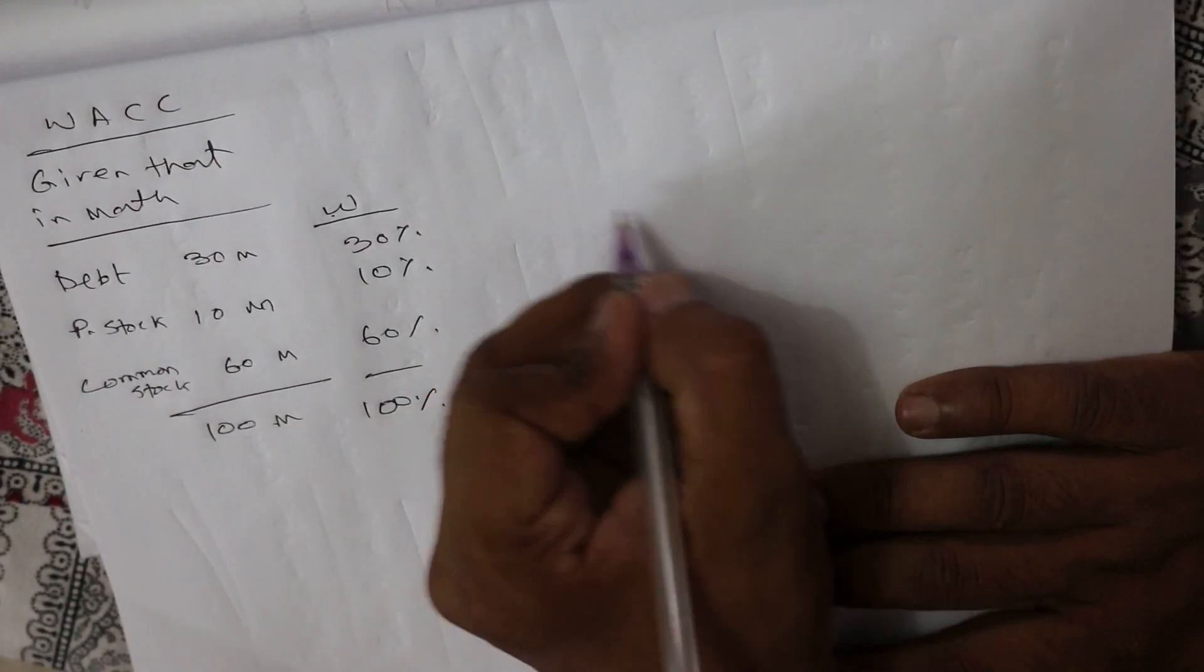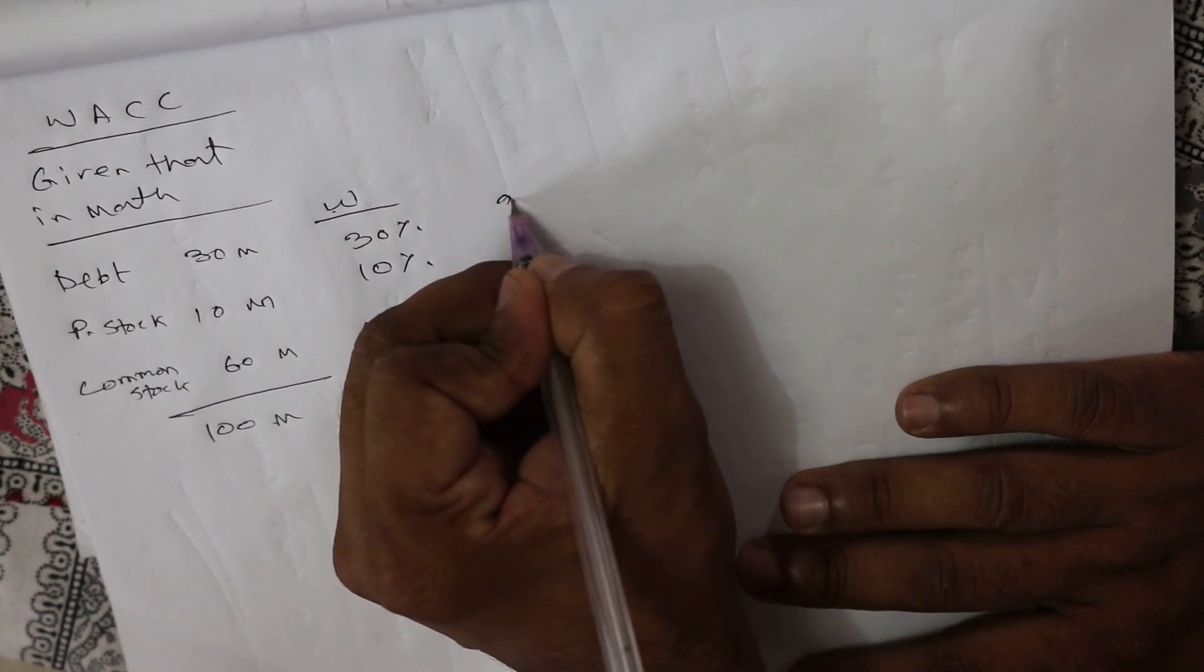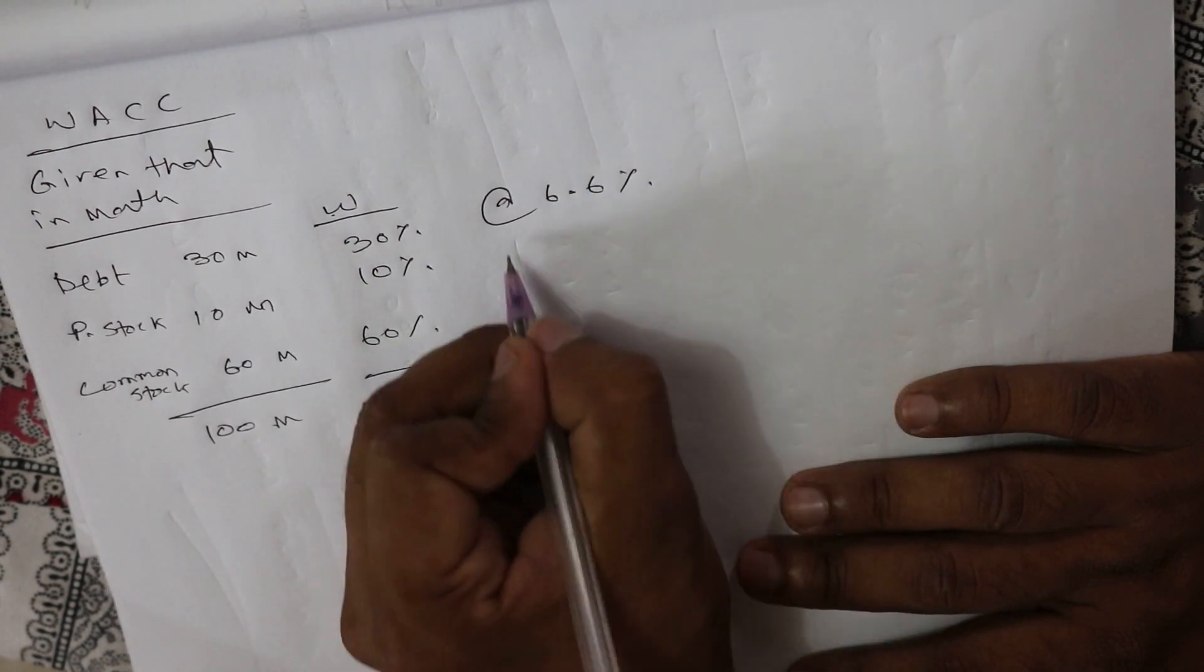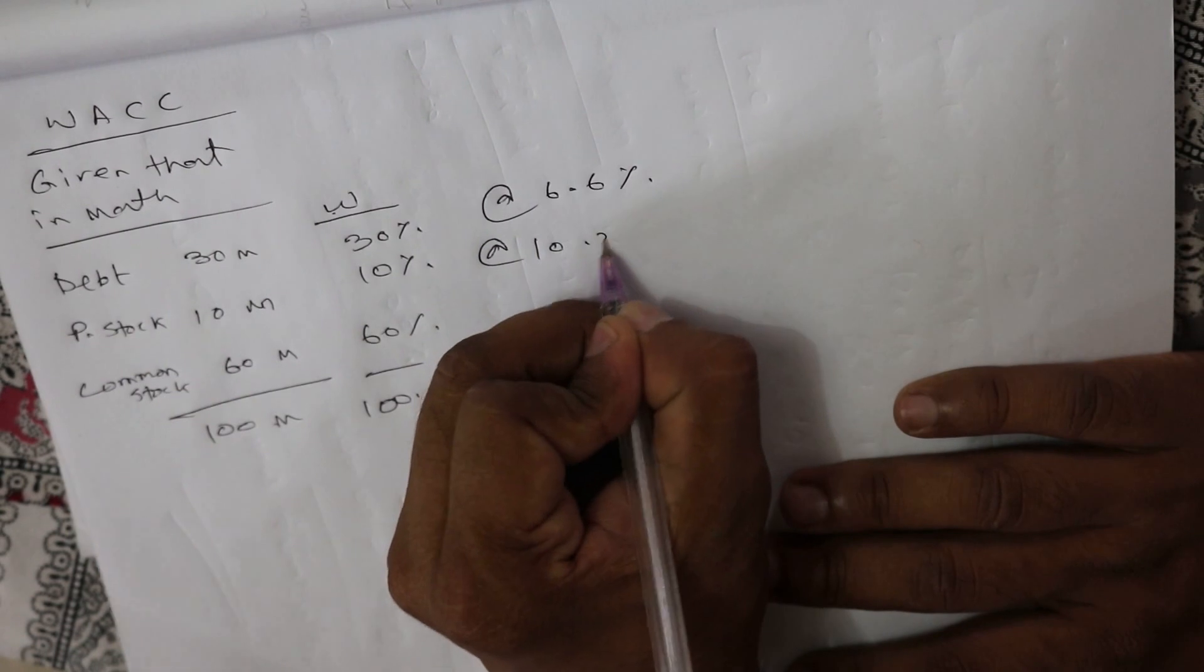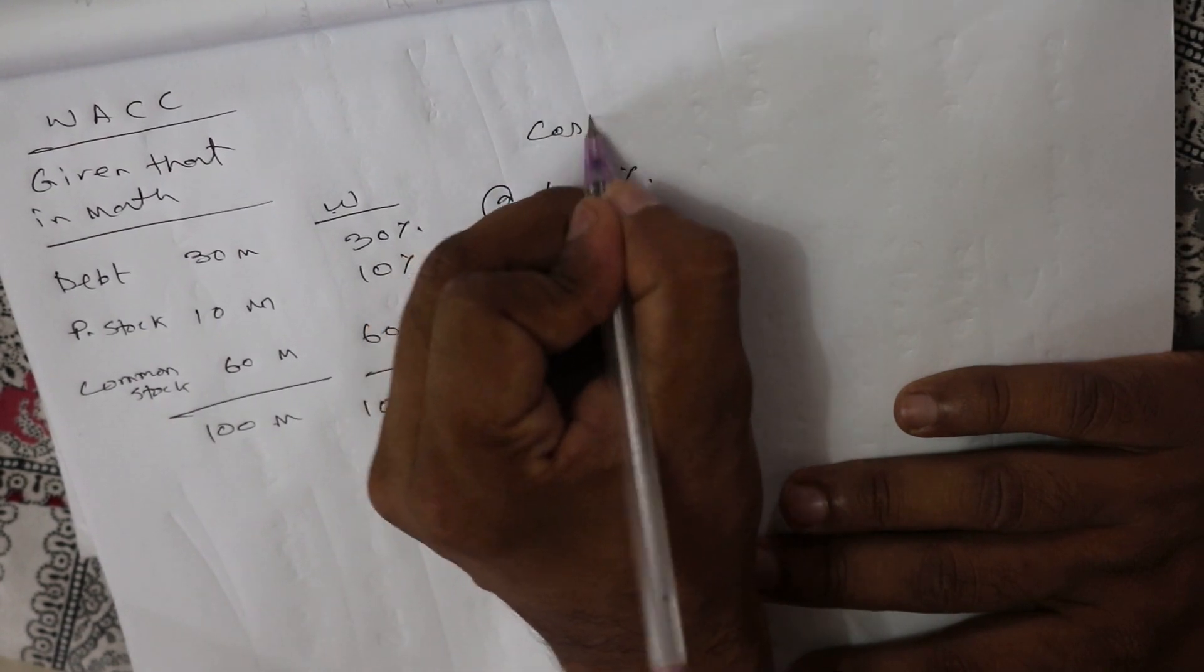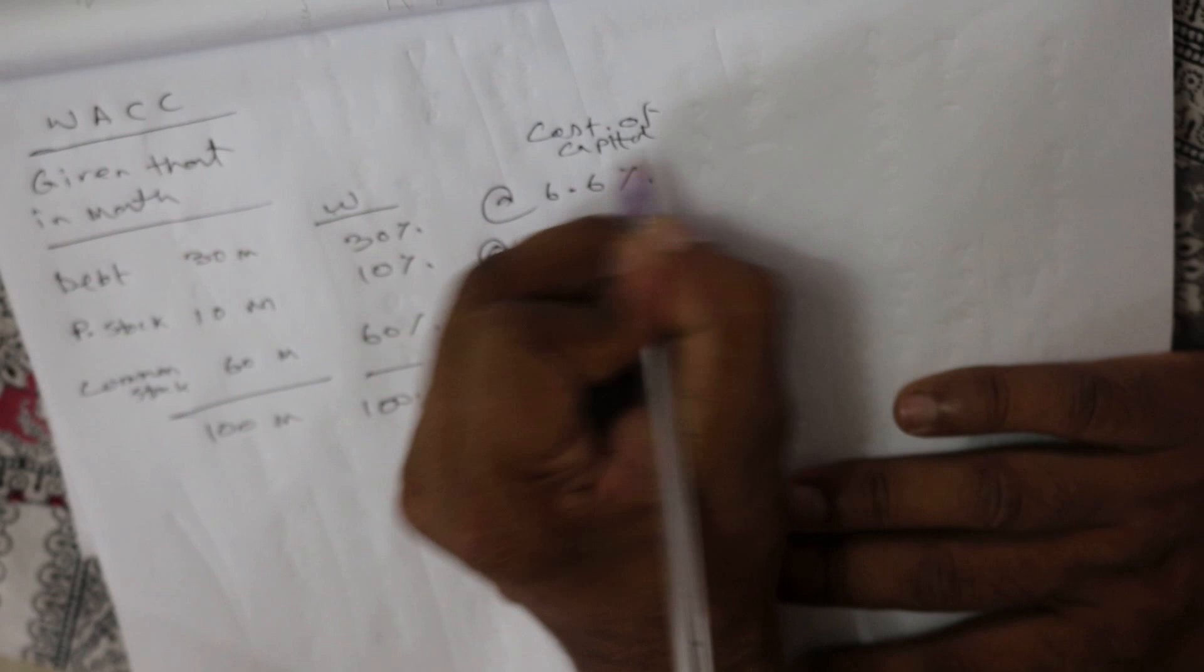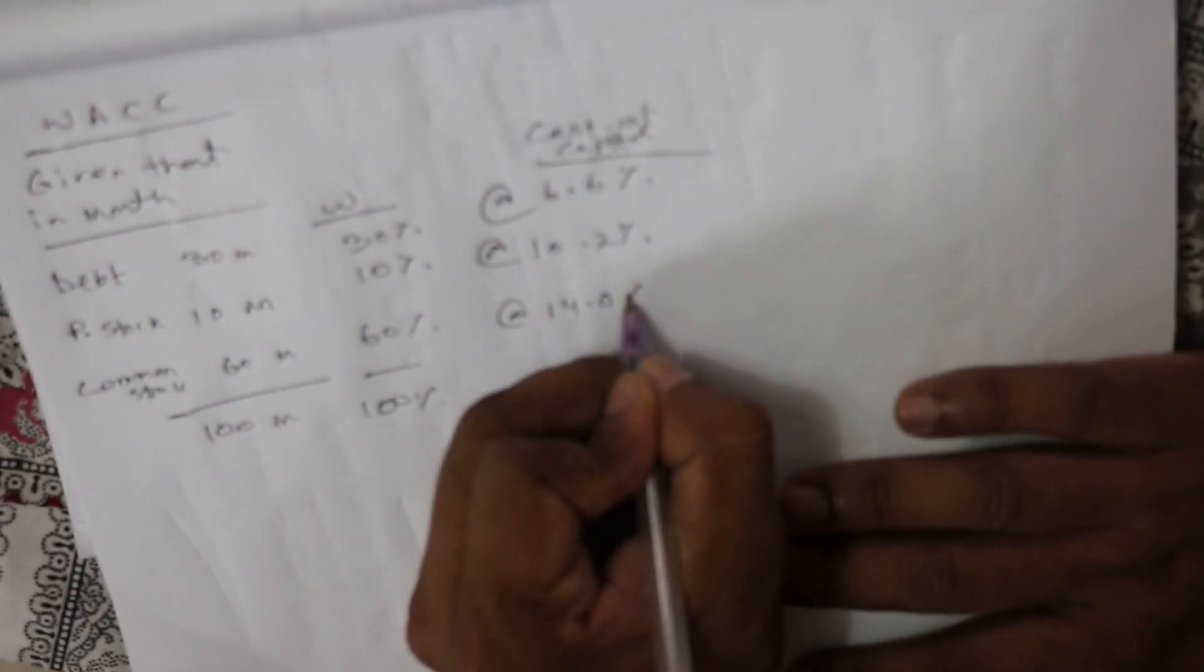Now given that cost of debt 6.6%, preferred stock 10.2%, common stock 14.0%.